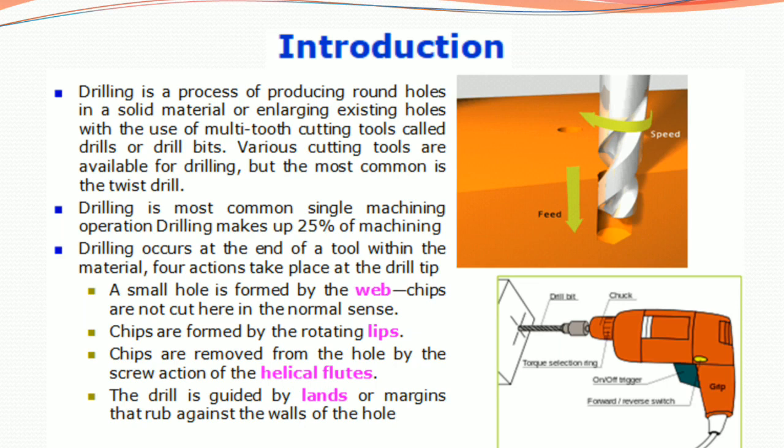Here is a picture of a drilling machine. The labeled parts include the drill bit chuck, feed, speed selector, forward or reverse switch, trigger, and torque selection.